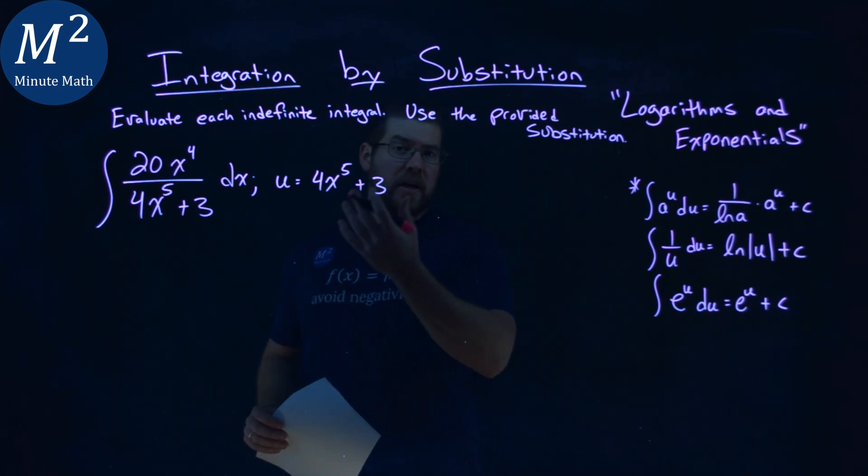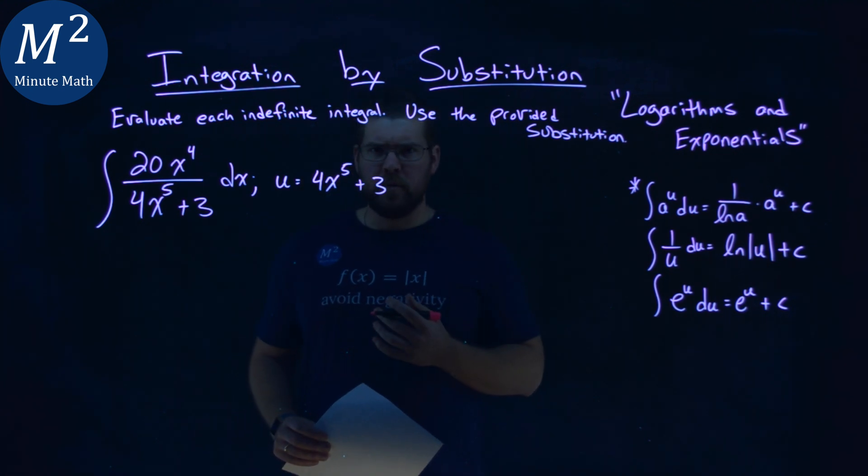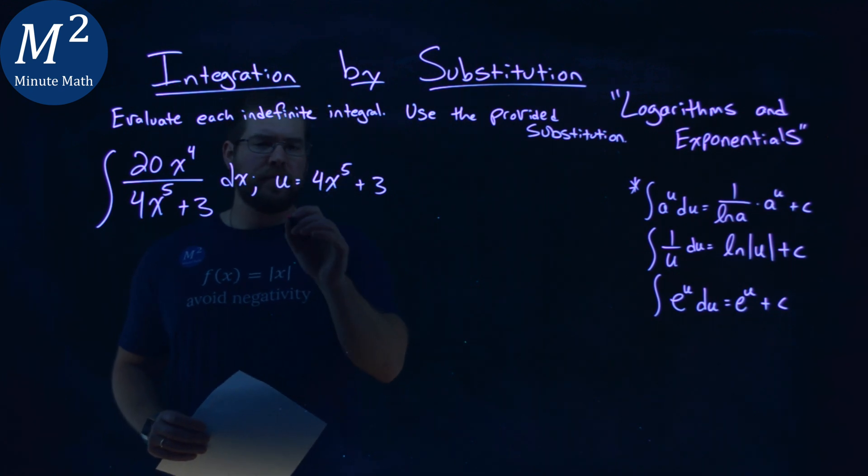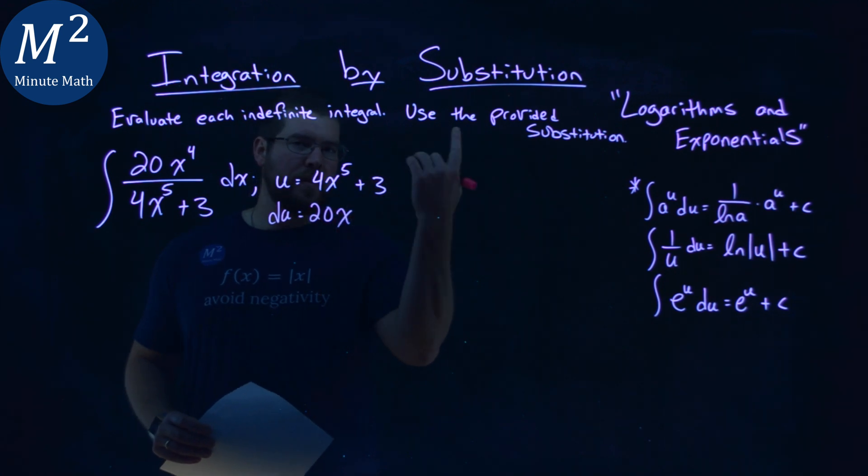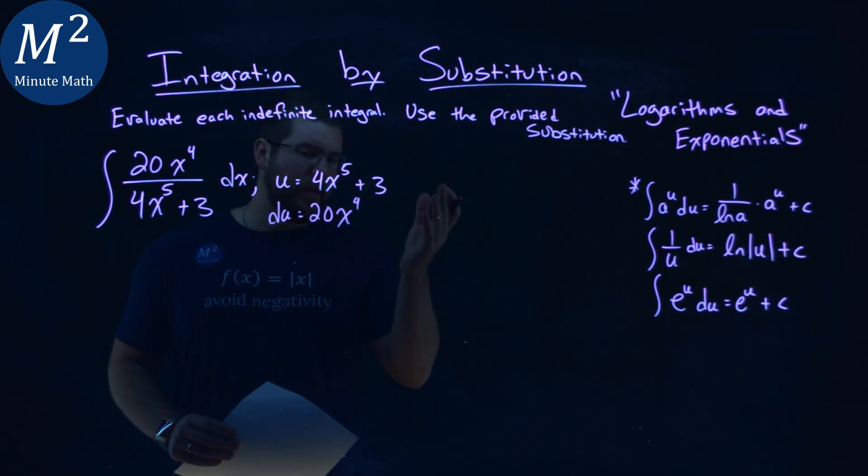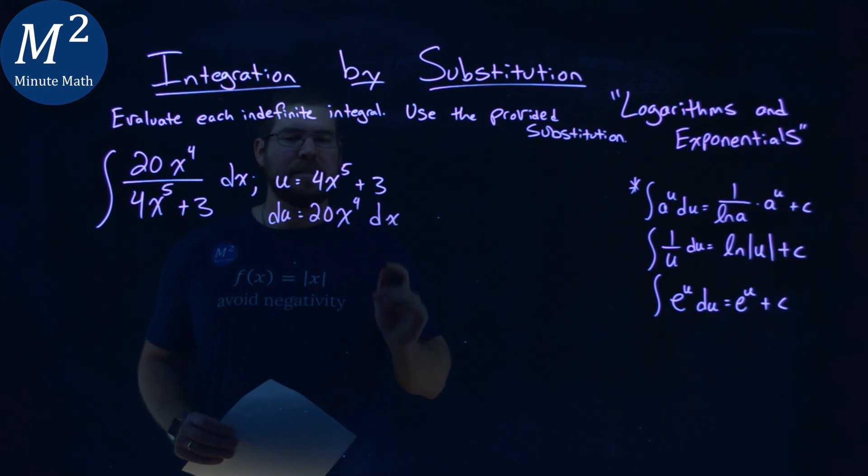Well, we already are given our u value, so let's go find our du value. So the derivative du equals 5 times 4 is 20, power rule here, x subtract the exponent by 1, and it's a 4, don't worry about the plus 3, and then we have dx.